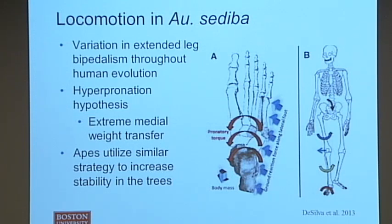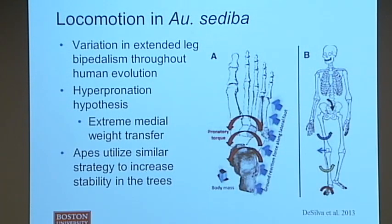Important within this understanding of a dual lifestyle is the hypothesis that sediba walked with extended leg bipedalism, which is similar to the way that we walk, but with a slight variation called hyperpronation. Variation in extended leg bipedalism has been proposed many times over the course of human evolution, but this is the first time a really specific form of variation has been proposed, and we partially wanted to test this.